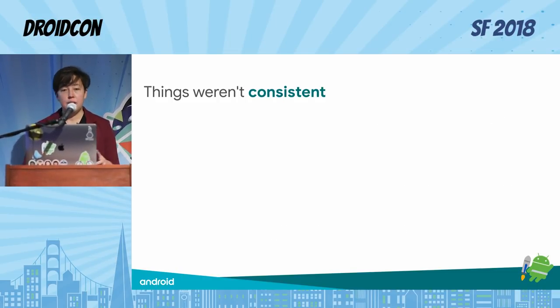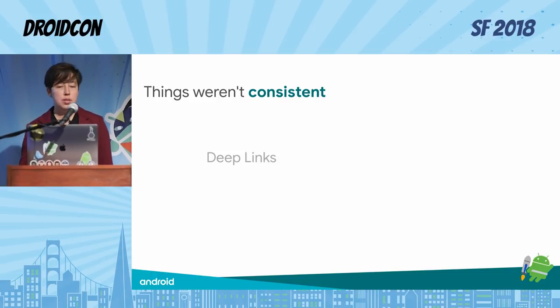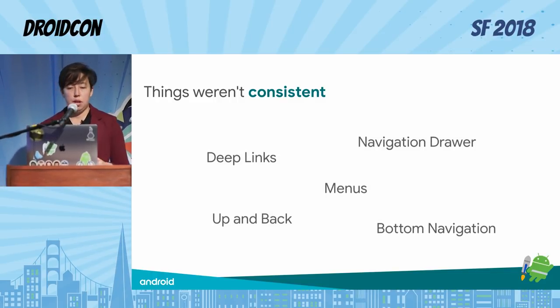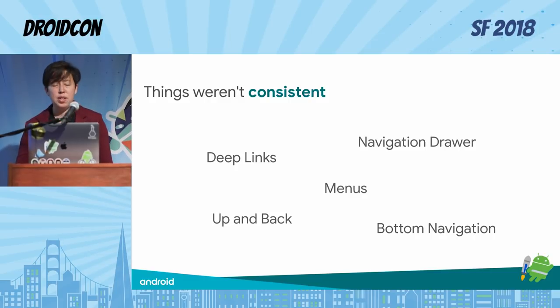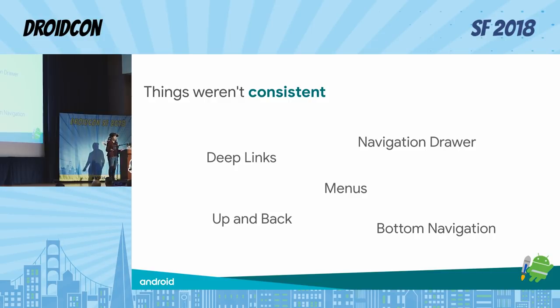Another issue is that things weren't consistent. All of these things that you're seeing up here, people would implement potentially slightly differently. And for something as fundamental as up and back, that can get really confusing for users.